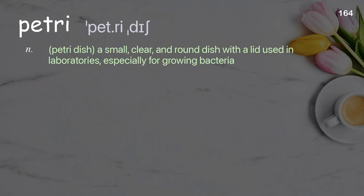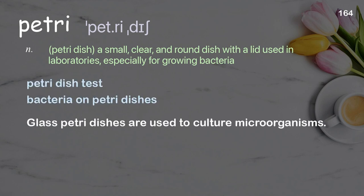Petri dish: a small, clear, and round dish with a lid used in laboratories, especially for growing bacteria. Examples: Petri dish test. Bacteria on petri dishes. Glass petri dishes are used to culture microorganisms.